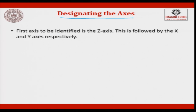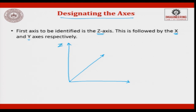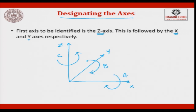The first axis to be identified in a CNC machine is z, followed by x, then y. So putting it back in coordinate form: this is your z axis, this is your x axis, this is your y axis, this is your C axis, this is your B axis, and this is your A axis. First start with z, then x, then y, then the rotational axes.